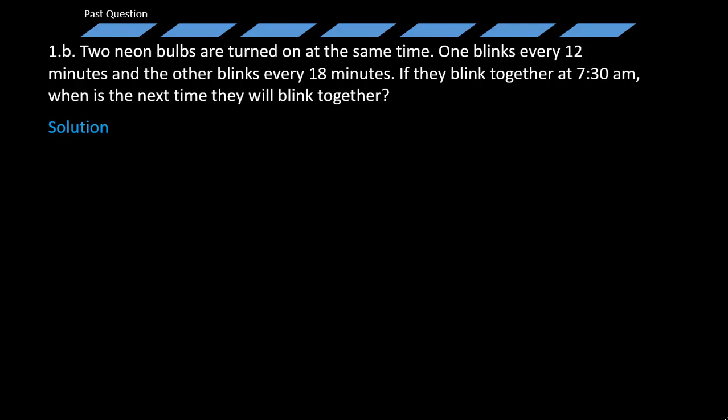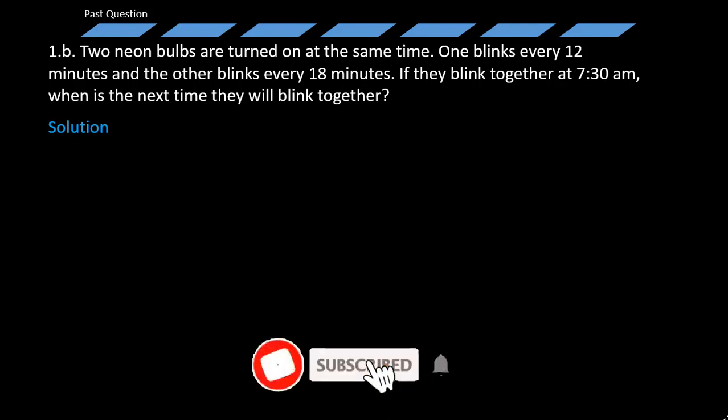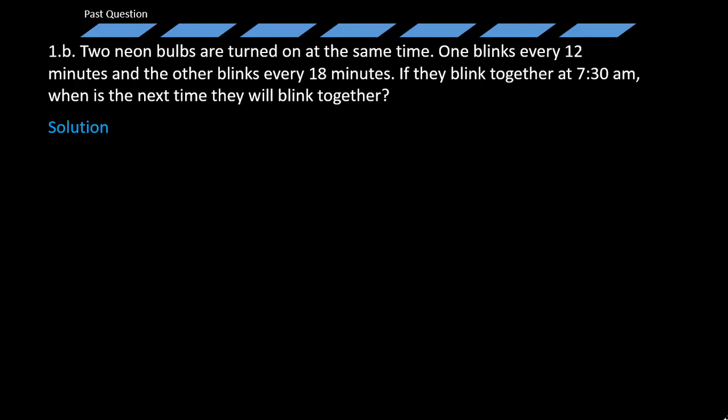For the first bulb, it blinks every 12 minutes. For the other bulb, it also blinks after the start of the time — every 18 minutes it blinks. You have to cumulatively keep adding 18 minutes: 18, to 18, to 18. That suggests the multiples of 18, and the same for the one that blinks every 12 minutes — you keep adding 12 to 12 to 12. Repeated addition is simply multiplication, and we apply it when listing the multiples of numbers.